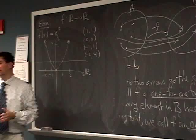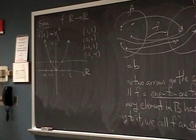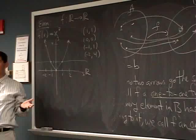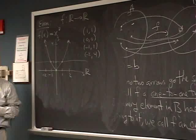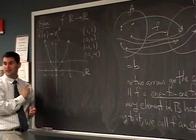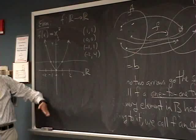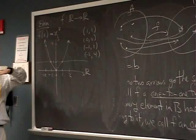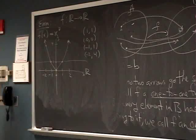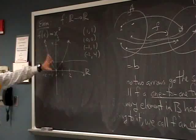Is x² onto? Onto means every element in the image gets hit. Are there points that don't get hit? Sure — y = −1, for instance. A horizontal line at y = −1 doesn't hit the graph anywhere. This is the horizontal line test: run horizontal lines through the graph. If it hits no times, the function is not onto. If it always hits exactly one time, the function is a bijection. If it hits more than one time at some point, it's not one-to-one. These are parabolas — very nice to know. Let's do another one.